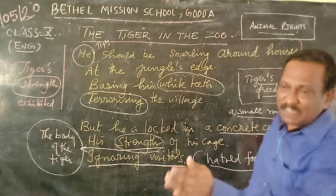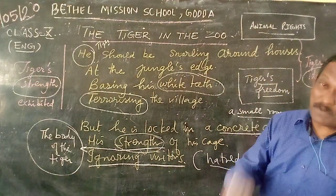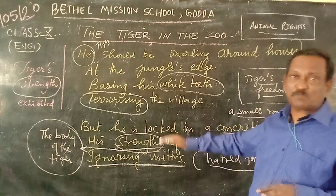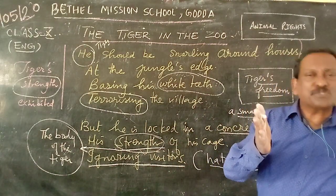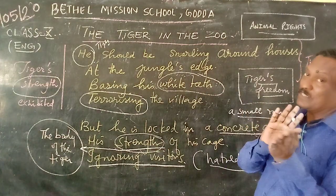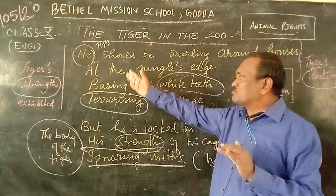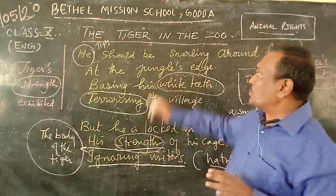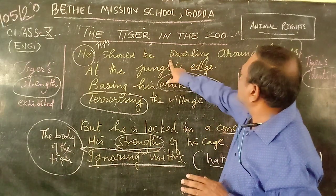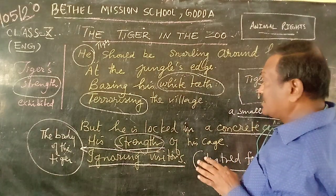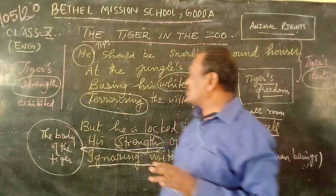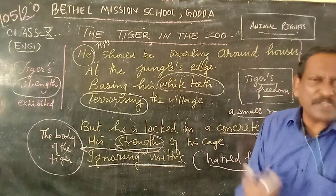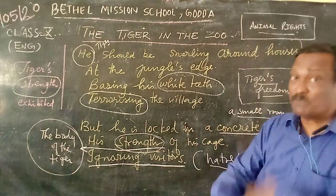For intimidating, dominating, and suppressing the freedom of the tiger — this is an environmental issue. When you read this poem, you must always keep the environmental issue at the back of your mind. If you read the poem with that issue in mind, it will be easy to understand what the poem is trying to talk about. This particular stanza talks about the tiger's identity, its freedom, and the strength of the tiger. The next stanza speaks about the pitiable condition of the tiger and the suffering he goes through in the cage.